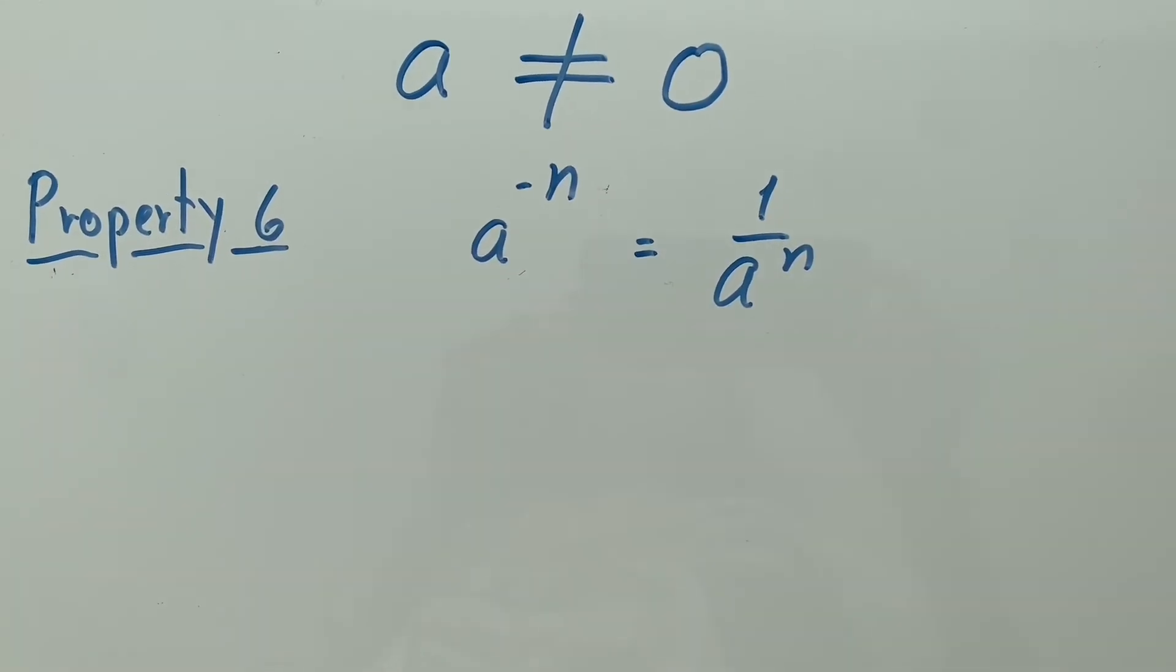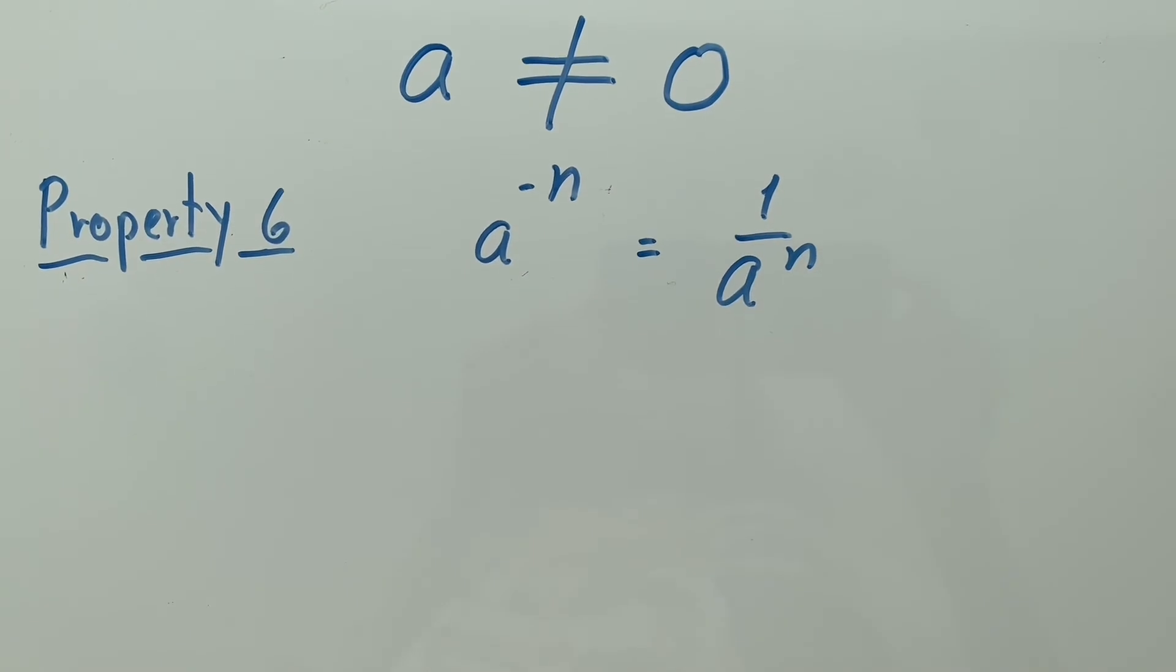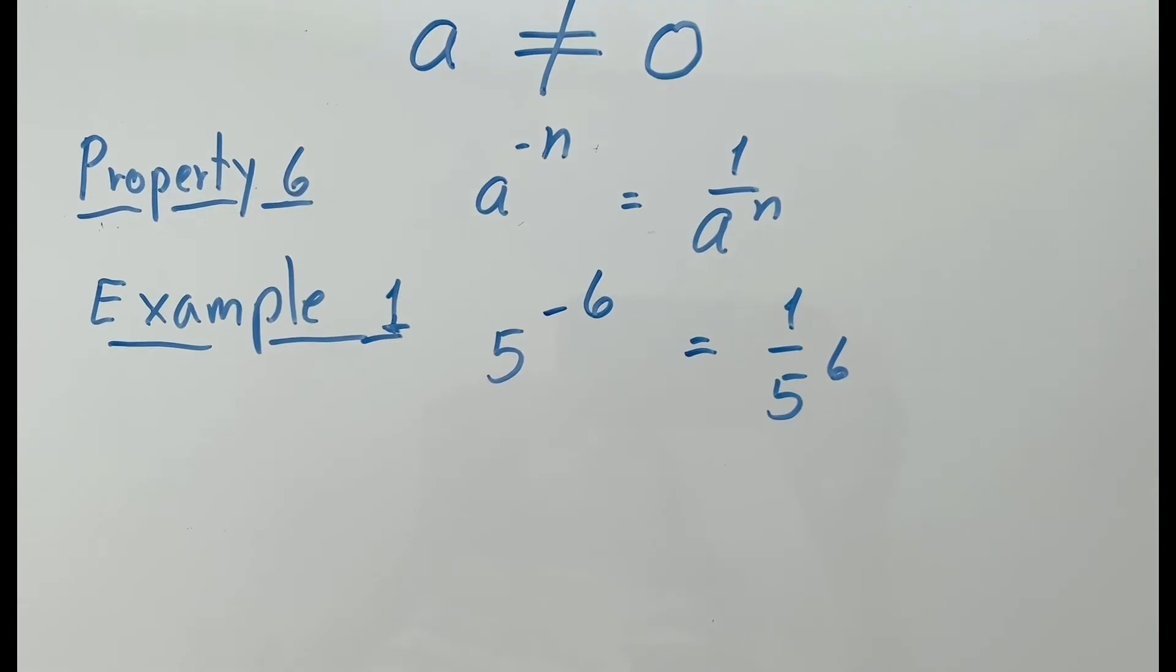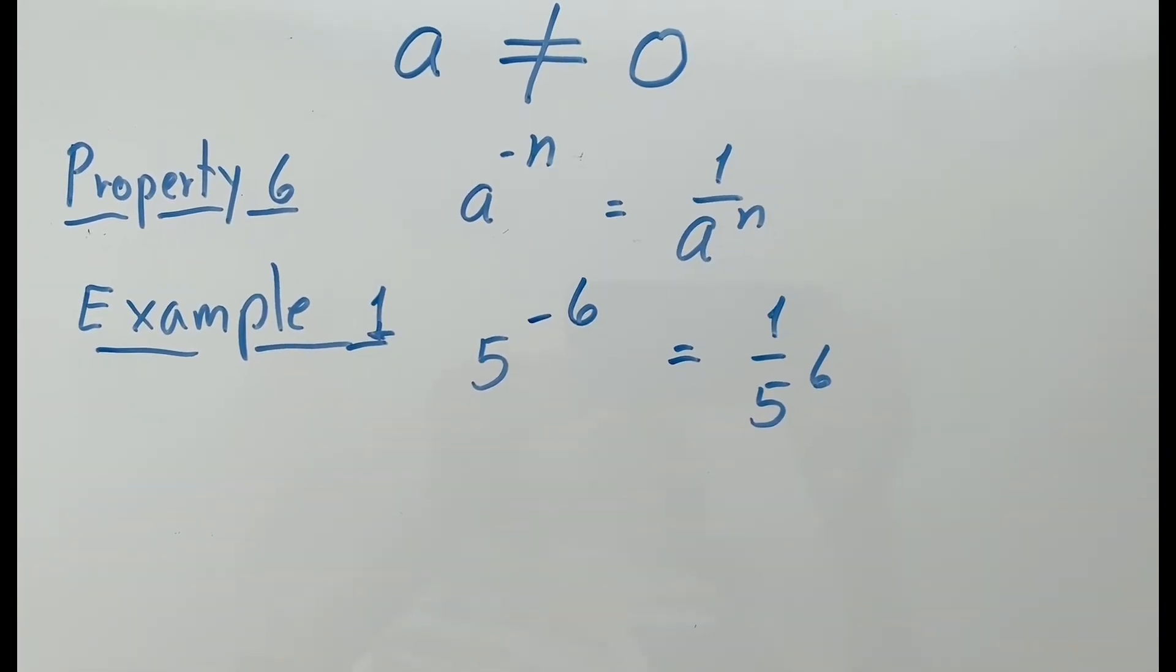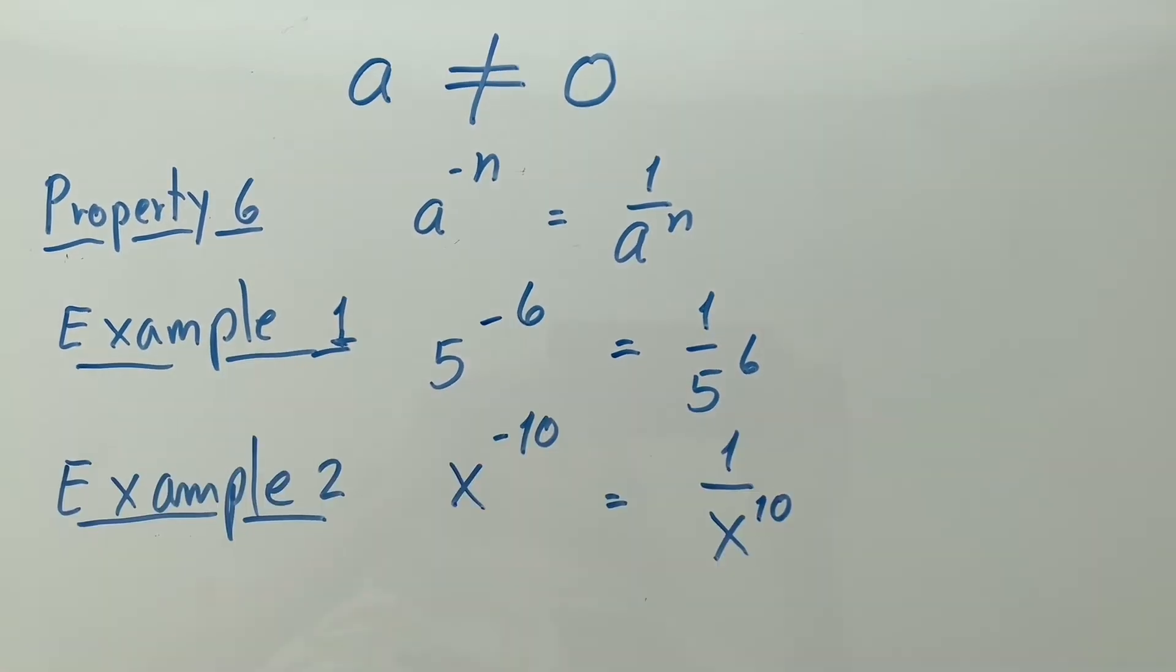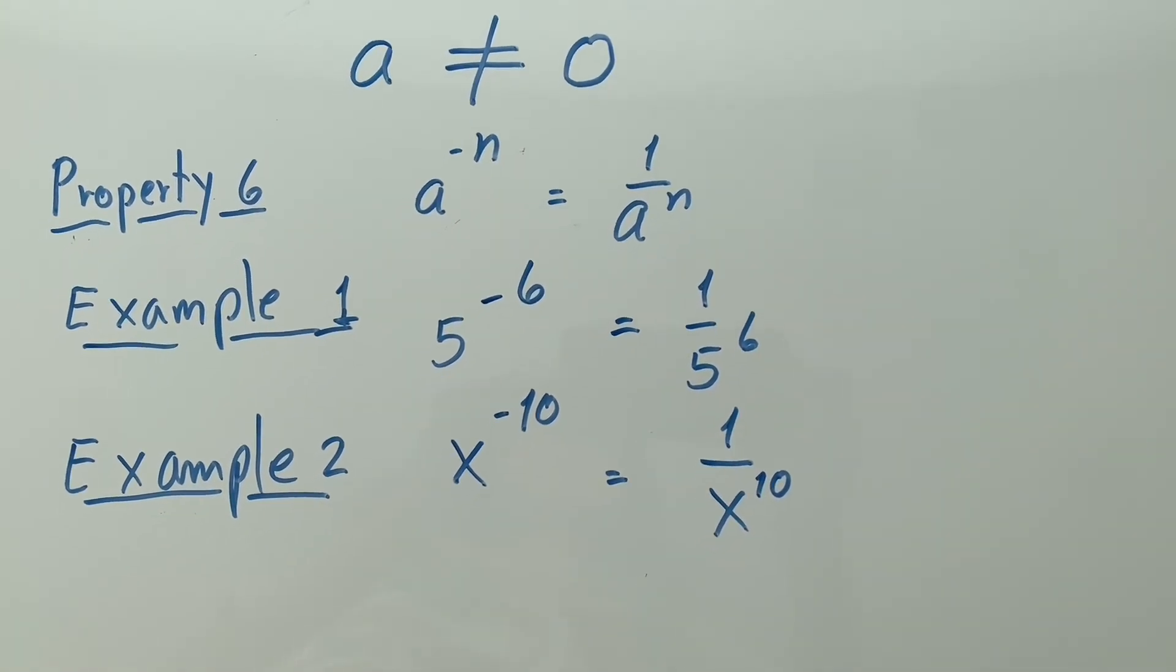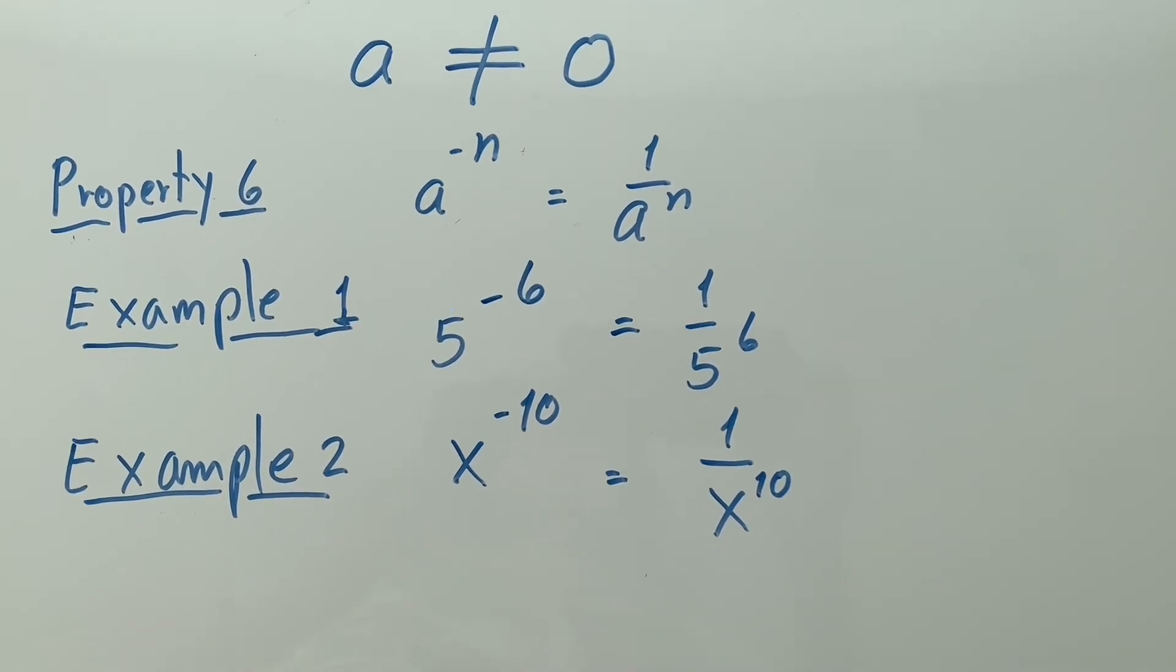Property 6: a to the minus n power equals 1 over a to n power. Example 1: 5 to the minus 6th power equals 1 over 5 to the 6th power. Example 2: x to the minus 10th power equals 1 over x to the 10th power.